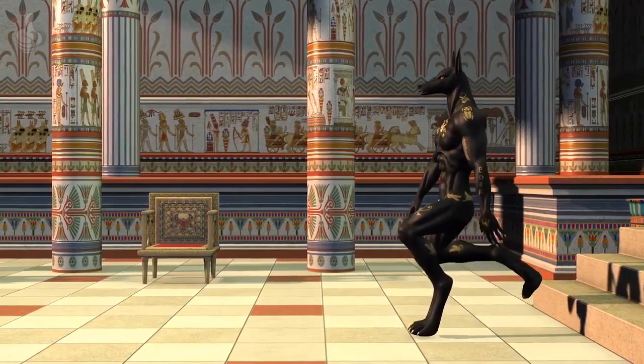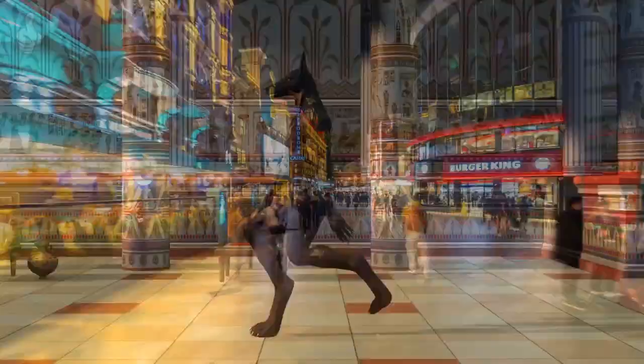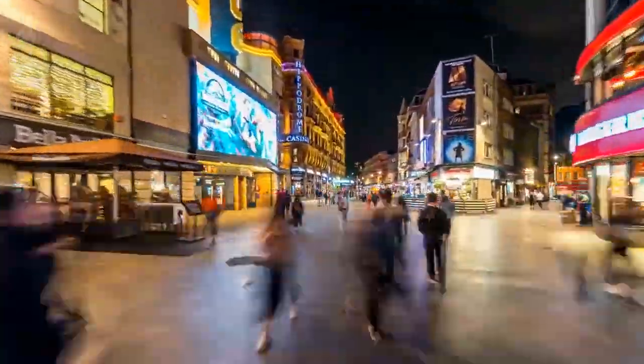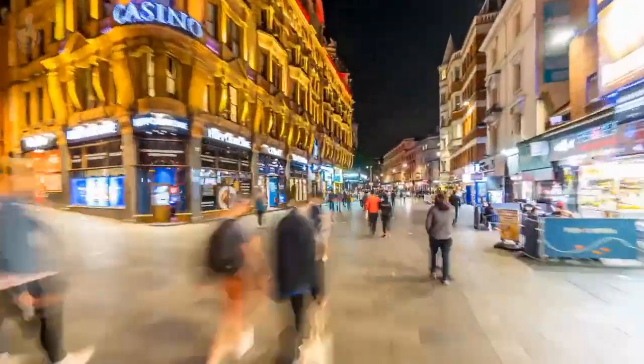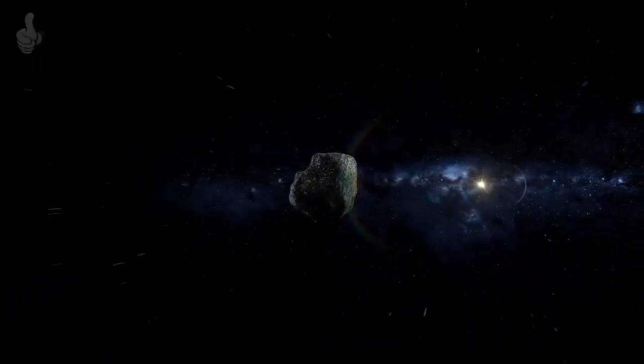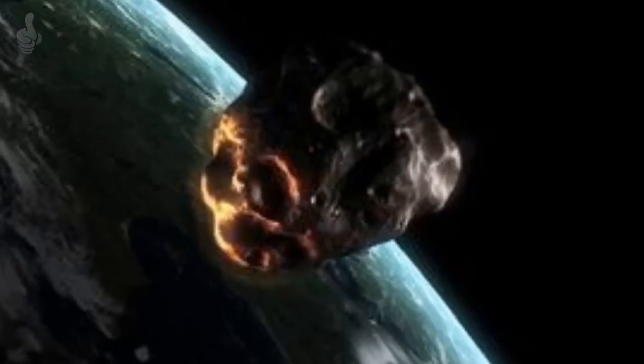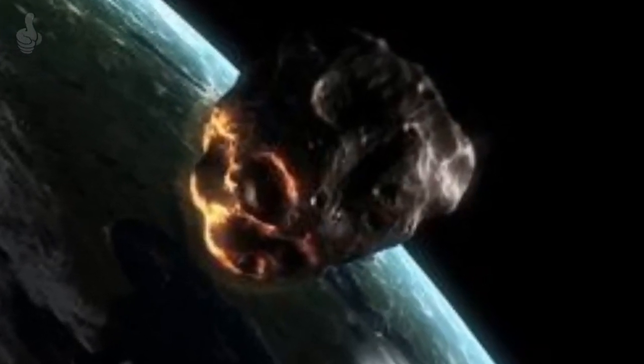Apophis is named after the ancient Egyptian god of evil, darkness and destruction. It is bigger than the Shard in London and any impact could have major consequences. If the 27 billion kilogram asteroid were to hit Earth, scientists calculate it would leave a crater more than a mile wide and a staggering 518 meters deep.